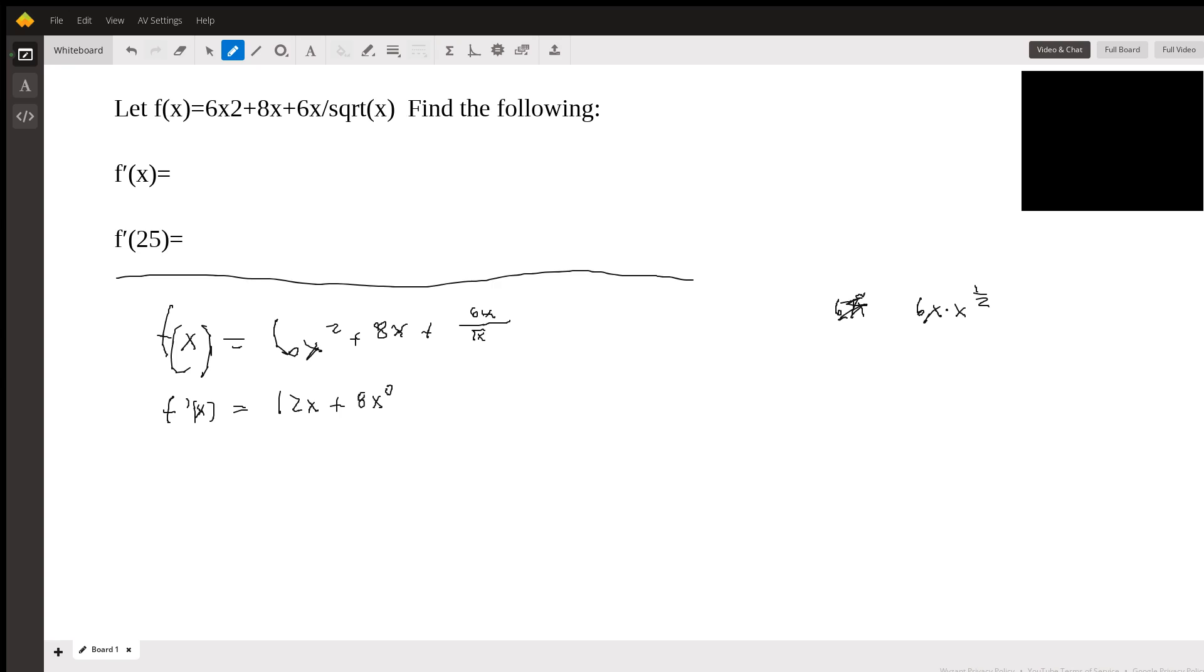And for this last term, we'll use the quotient rule. So it's the numerator times the derivative of the denominator. So it's going to be 6x, and once again power rule here, 1 half x to the negative 1 half. So it's the numerator times the derivative of the denominator minus the denominator times the derivative of the numerator all over the denominator squared, which is just going to be x.